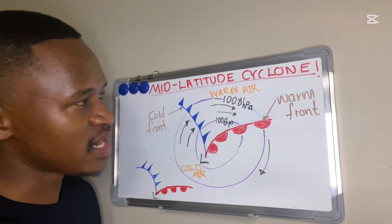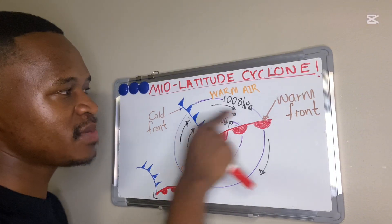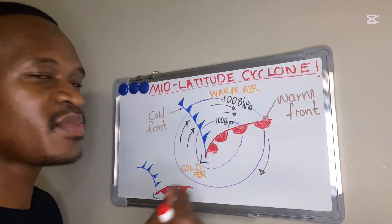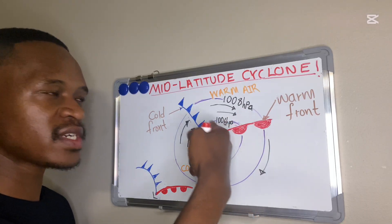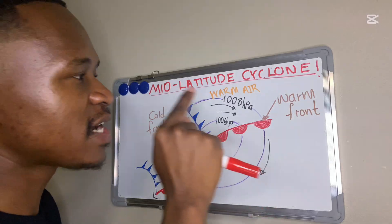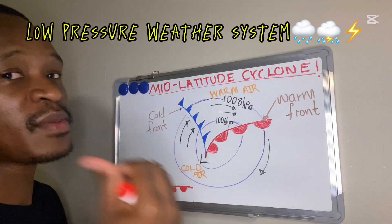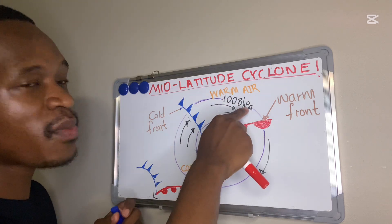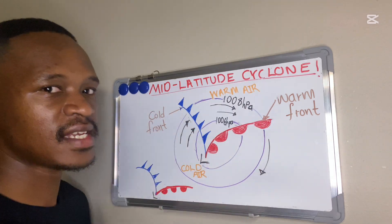If you look at the isobar readings, we have 1008 hectopascals and 1006 hectopascals. The isobar readings are decreasing towards the center because the mid-latitude cyclone is a low pressure system. For a low pressure cell, the isobar values decrease towards the center.